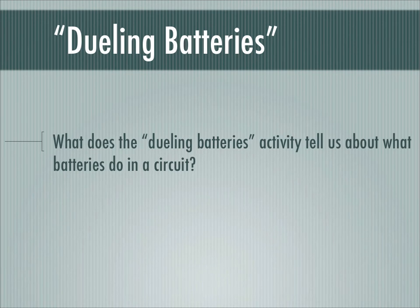The question is: what does the dueling batteries activity tell us about what batteries do in a circuit? It appears that dueling batteries showed that batteries can push against each other. So it shows that batteries actually just push — they don't shoot anything out of them. In dueling batteries, we showed they could push against each other, and in fact we even saw that they could cancel each other out.